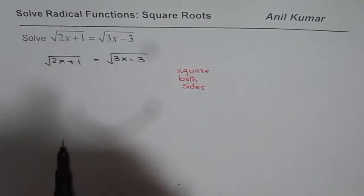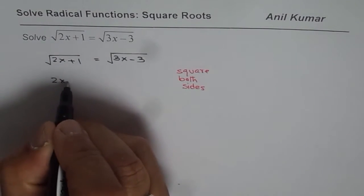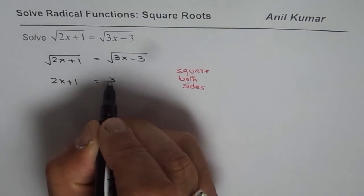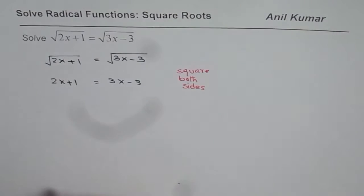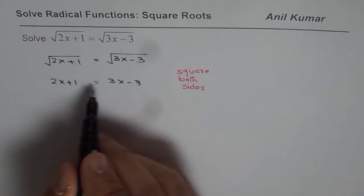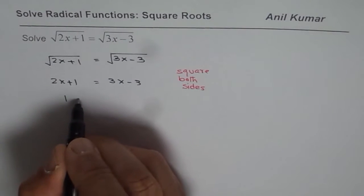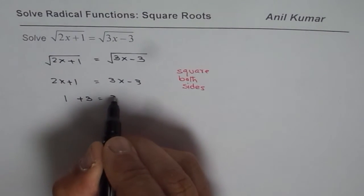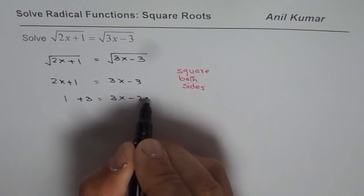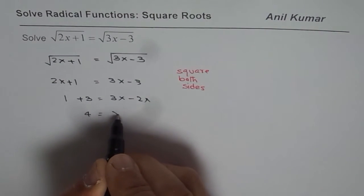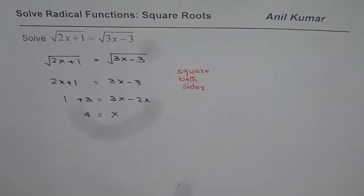When I square both sides, I get 2x plus 1 on the left side equals 3x minus 3 on the right side. Now we can bring the variables and constant terms together. 1 plus 3 equals 3x minus 2x, or 4 equals x. So x equals 4 is our solution.